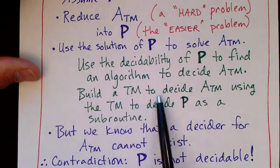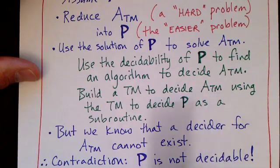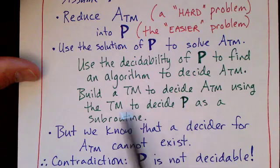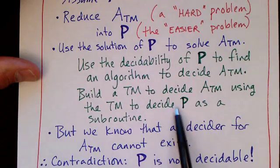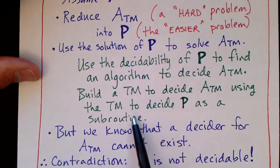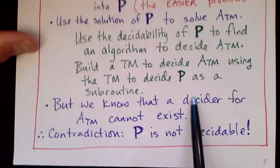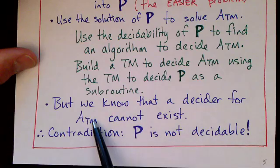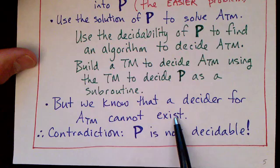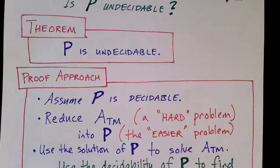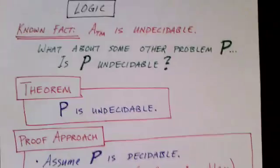We're going to build a Turing machine to decide the acceptance problem for Turing machines, using the Turing machine that decides P as a subroutine. If P is decidable, then we know there is some Turing machine — a decider for P — that will decide it. We'll show how we can use that decider for P as a subroutine when we construct a decider for the acceptance problem. But of course, we know that a decider for the acceptance problem for Turing machines cannot exist. So we've come to our contradiction, and we can go back and realize that our assumption was incorrect — in fact, we're proving that P is undecidable. This is the general logic of the proofs by reduction that we're going to be using.